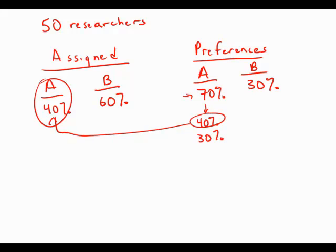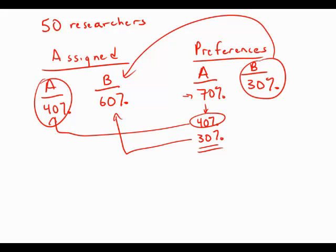Now group B, that's kind of the smelly group that not as many people want. There are these 30% who for whatever reason want to be in the smelly group, so we'll put them in there. But then that means this last 30%, the folks who preferred A, they also have to go into B.